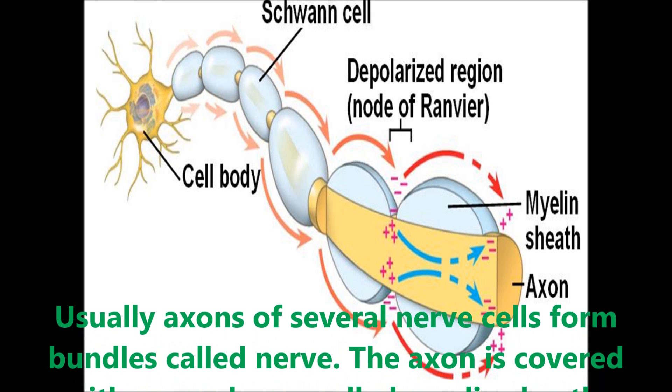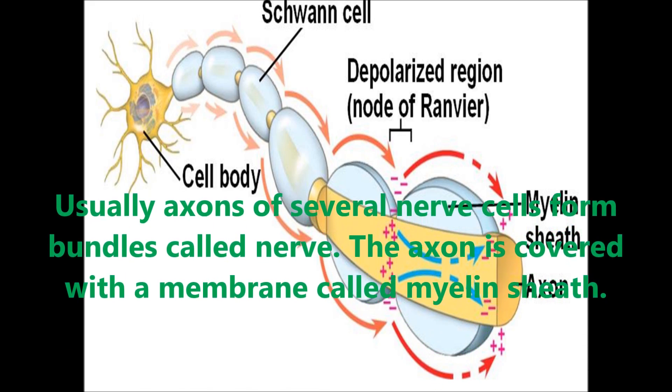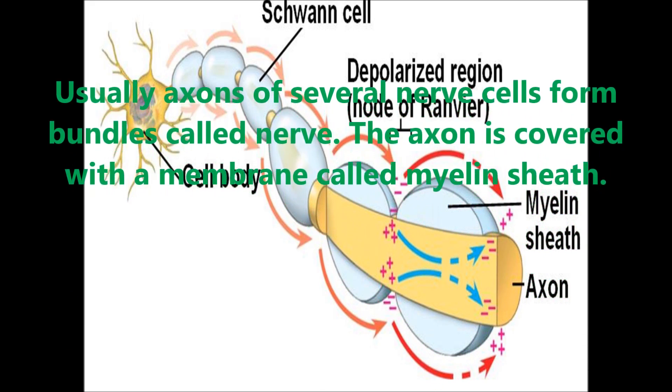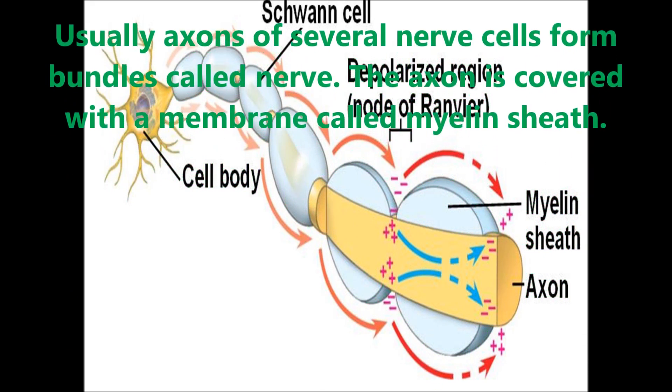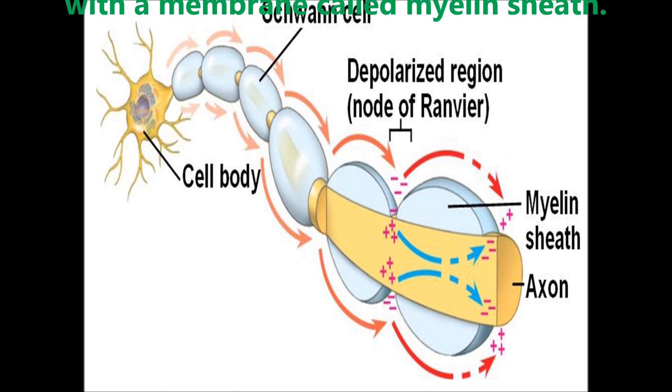Usually, axons of several nerve cells form bundles called nerves. The axon is covered with a membrane called the myelin sheath.